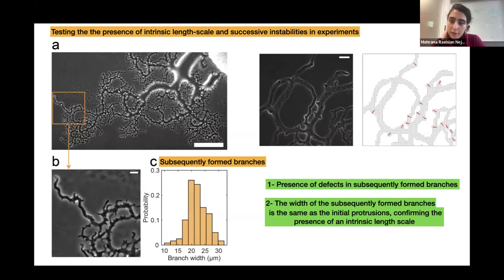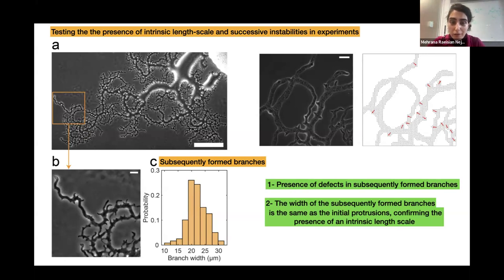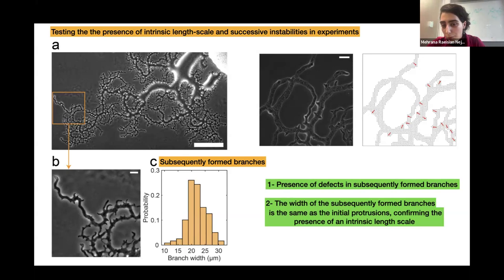To check in experiments whether the pattern is really set by the active length scale, they look at the period of the pattern in later-stage branches. The branches that form at the very end have the same width as the branches formed initially at the interface of the droplet, confirming an intrinsic length scale that is independent of curvature and independent of the stage of the instability. Furthermore, the later-stage branches are also formed by defects, very similar to the simulations and theory, confirming the role of plus-half defects in the formation of these patterns.